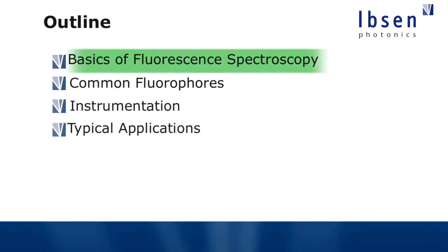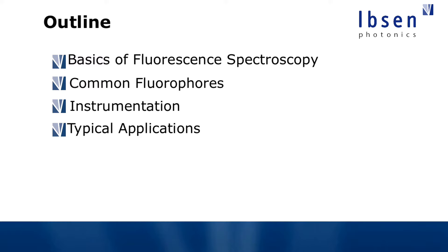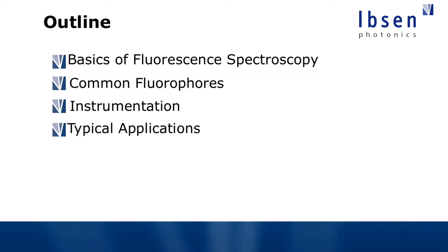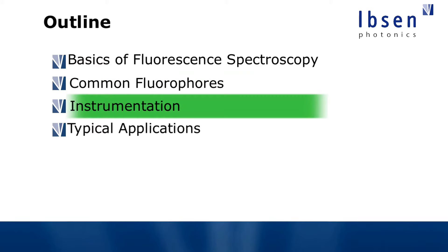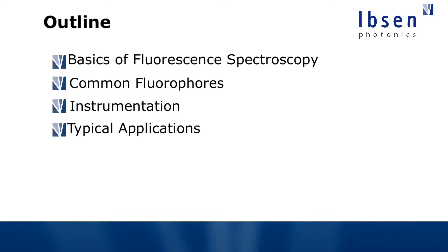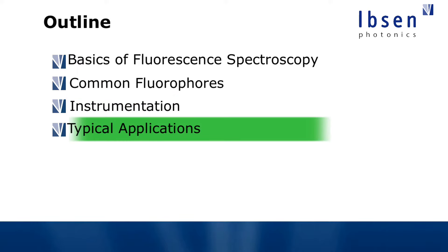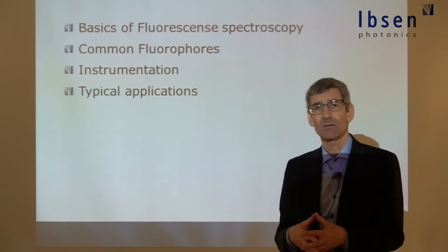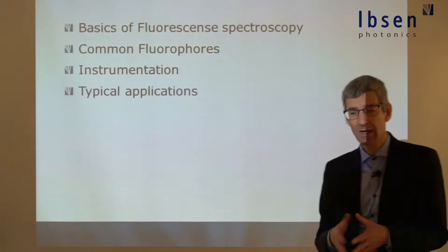In this tutorial I'll first talk about the basics of fluorescence spectroscopy, then about some of the fluorescent materials commonly used — called fluorophores. I'll go through some of the more common instruments for fluorescence spectroscopy, and finally cover typical applications including concentration measurements, time-resolved fluorescence spectroscopy, and fluorescence resonance energy transfer, also known as FRET.